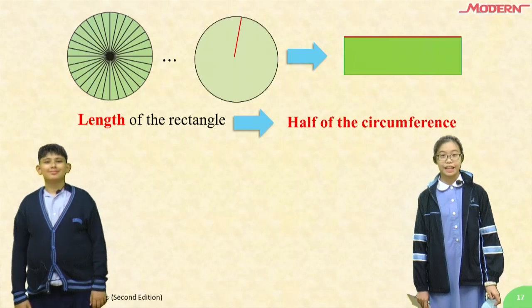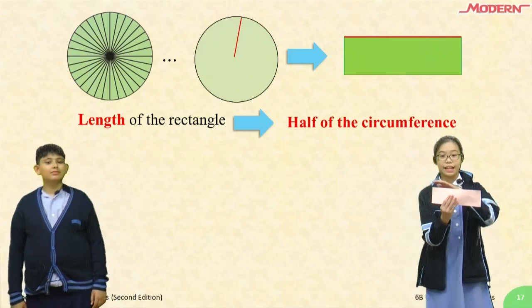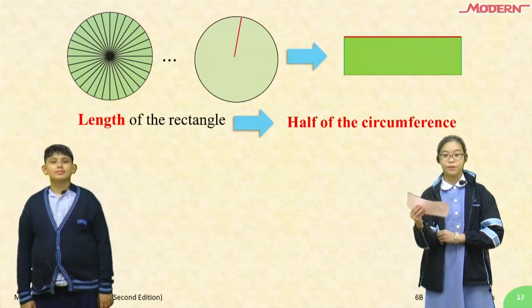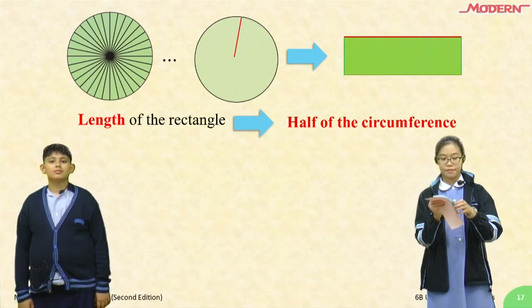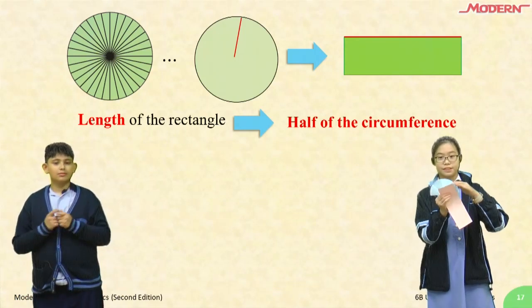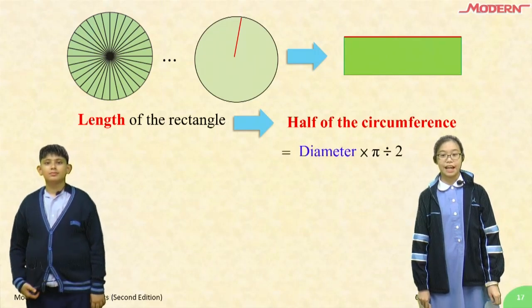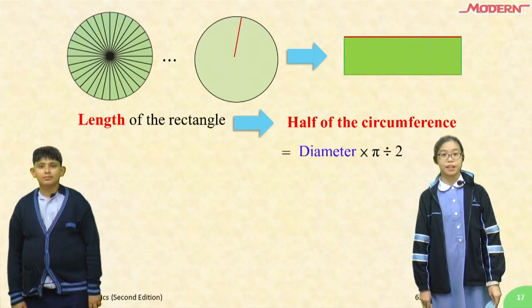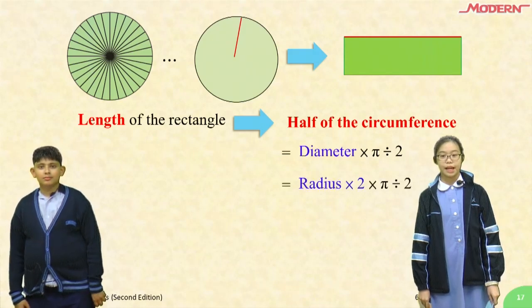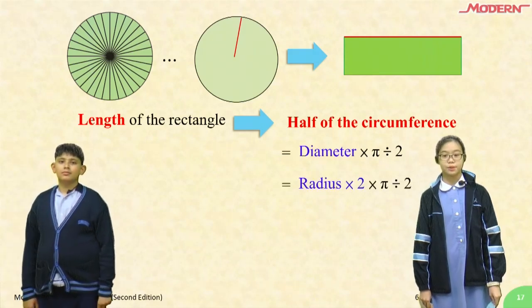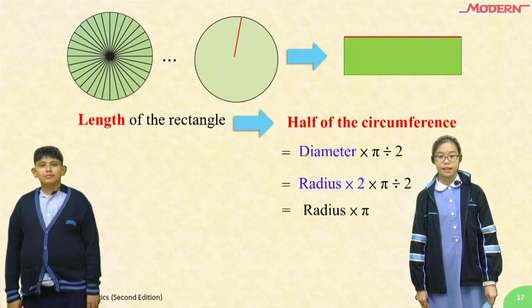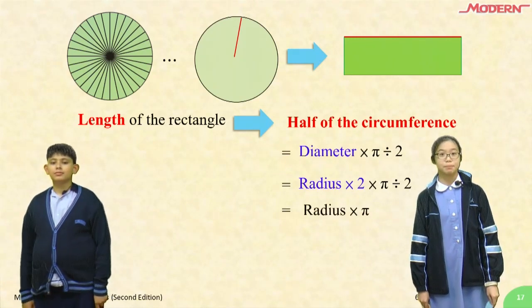Actually, I found out that the length of a rectangle is half of a circumference. Equals diameter times pi divided by 2 equals radius times 2 times pi divided by 2 equals radius times pi.